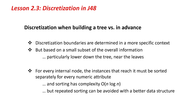Another issue is computational complexity. As described, for every internal node the instances that reach it must be sorted separately for each numeric attribute, so you can work out which split point gives the best information gain. The complexity of sorting is n log n, where n is the number of things being sorted. It looks like you'd have to repeatedly sort instances, which could be demanding, but repeated sorting can be avoided with a better data structure. It's not computationally disastrous to do internal discretization.